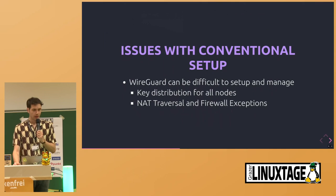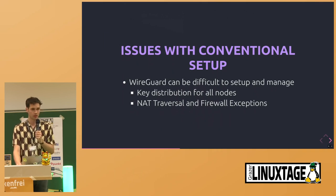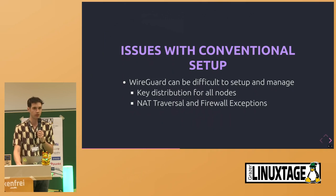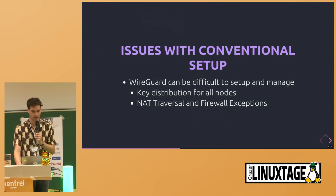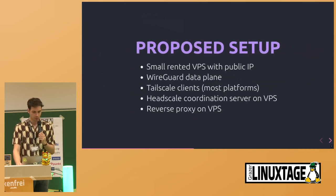The issue with that is that WireGuard can be difficult to set up. Some of you might disagree — some people have managed to set it up quite easily — but there are issues like key distribution for all nodes, managing NAT traversal, and setting up firewall exceptions on all of your hosts in the VPN. So I have a different setup that I use and would like to propose today.